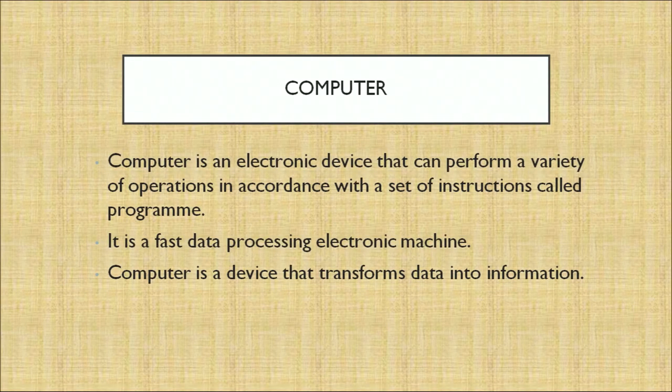What is a computer? All of us know about computers today. Every one of us is using a computer or a laptop. A computer is an electronic device that can perform a variety of operations in accordance with a set of instructions called a program. It is a fast data processing electronic machine. A computer is a device that transforms data into information. We will discuss in detail how this computer has helped us with respect to accounting processes.